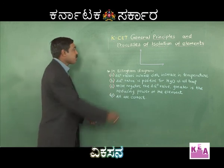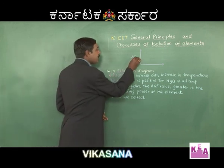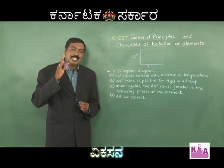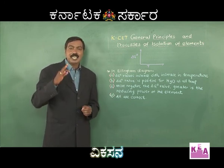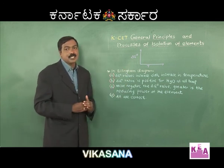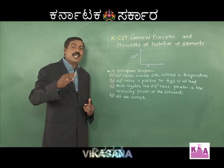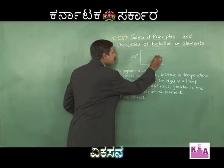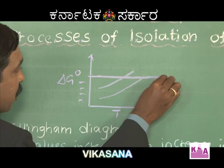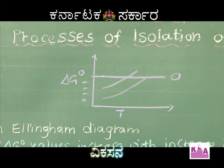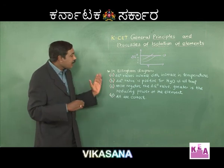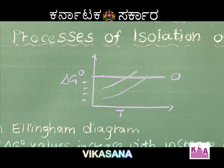It is a graph of standard free energy change versus temperature. With increase in temperature, the delta G-naught value increases — it slopes upwards. We have negative values, and one curve parallel to the x-axis, which is for carbon dioxide. As the temperature increases, the curves slope upwards.